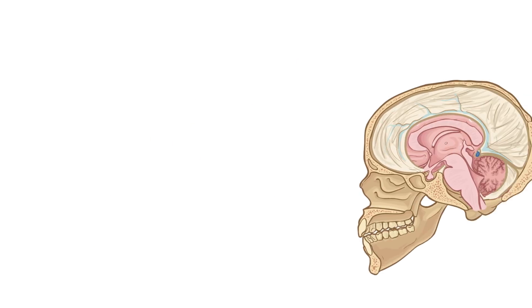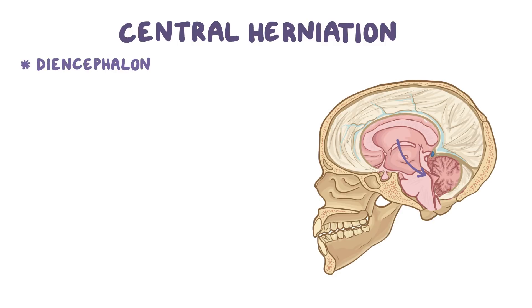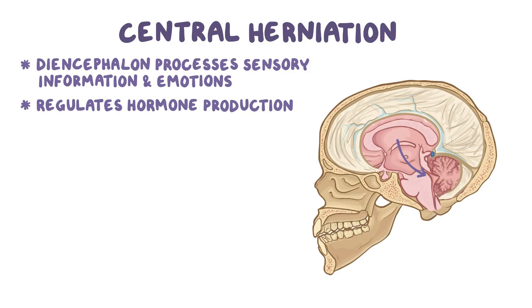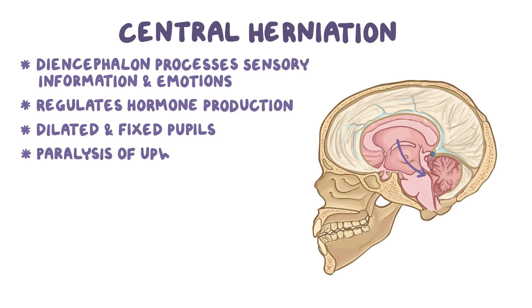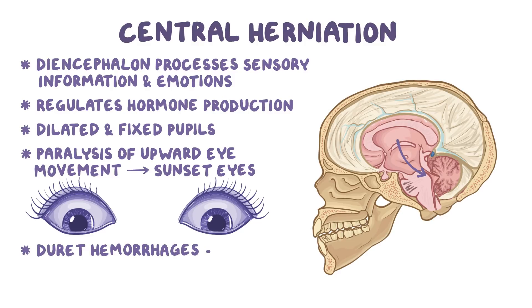The second type of supratentorial herniation is central herniation, which is when the diencephalon and parts of the temporal lobe slip under the free edge of the tentorium. The diencephalon processes sensory information and emotions and regulates hormone production, so all of these can be affected. Central herniation can also cause dilated and fixed pupils and paralysis of upward eye movement, leading to the sunset eye sign, where the eyeballs are in a downward position with the lower pupil covered by the lower eyelid. Duret hemorrhages can also be seen in central herniation.